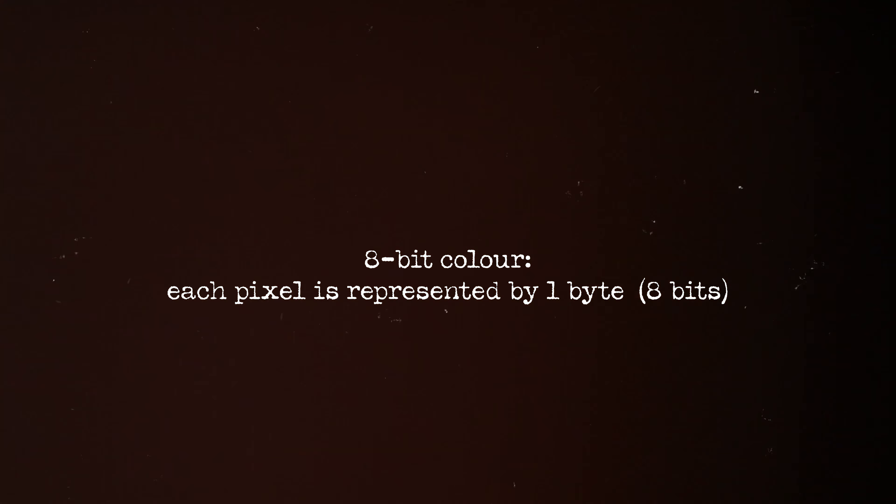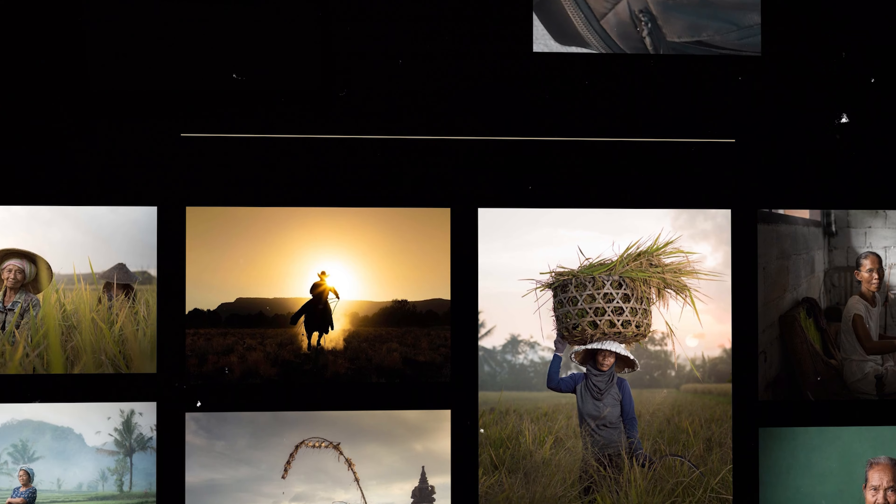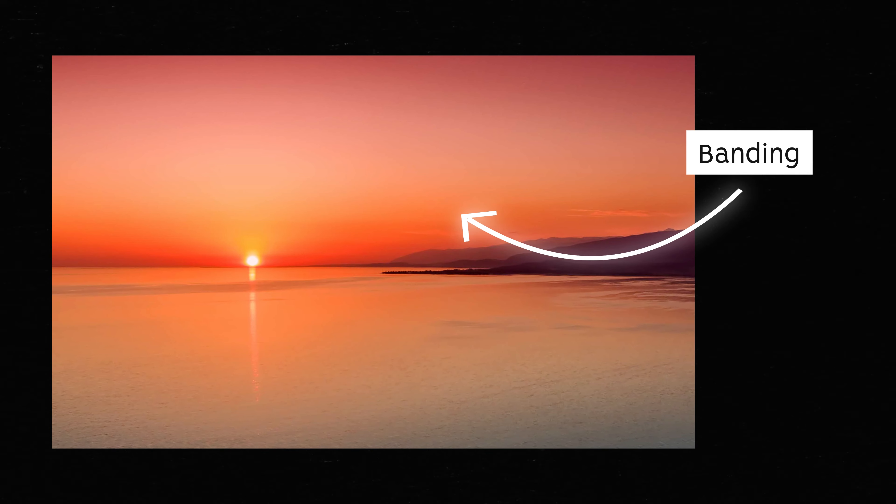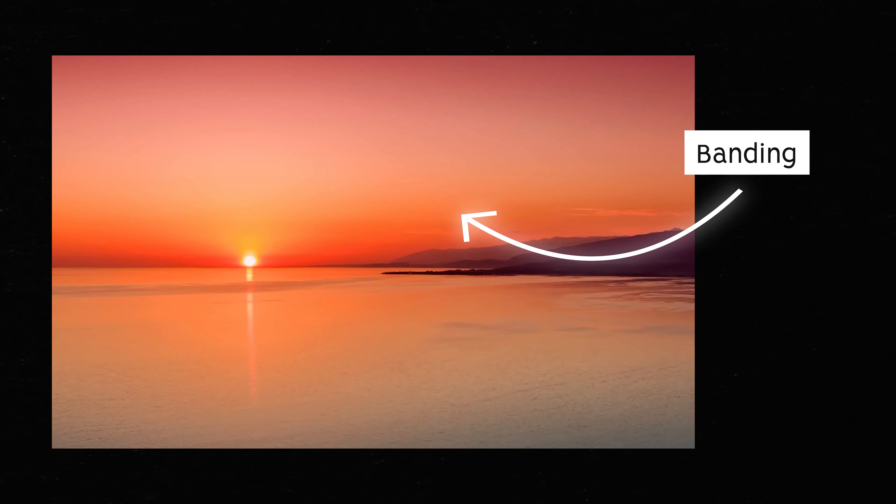Let's start by looking at 8-bit images. With 8-bit, each pixel of an image is represented by a single byte — which is 8 bits — of data, allowing for 256 levels of shades of each primary color: red, green, and blue, resulting in a total of 16 million colors within a single image. This makes 8-bit images ideal for web graphics as they are small enough in size but still retain adequate detail for most applications. However, one downside is that because there are only 256 levels per color channel, there can be noticeable banding in gradients — the smooth transitions from one color to another — due to a lack of intermediate tones.